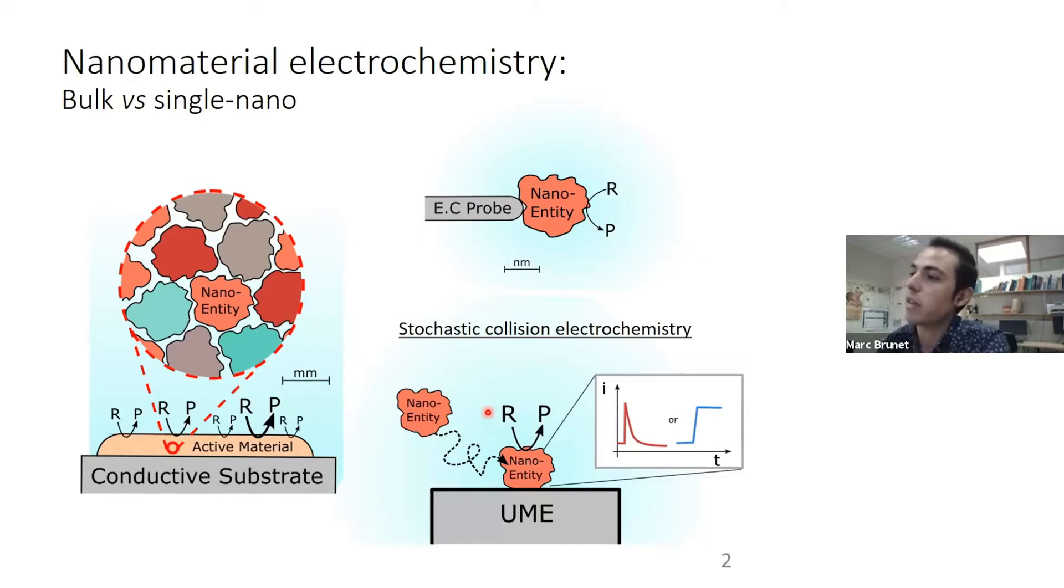One of the most successful cases in doing so is conducting stochastic collision electrochemistry. In those experiments, the nanoentities are dispersed in solution, and just by free diffusion, they will eventually collide with a microelectrode that is placed inside the solution.